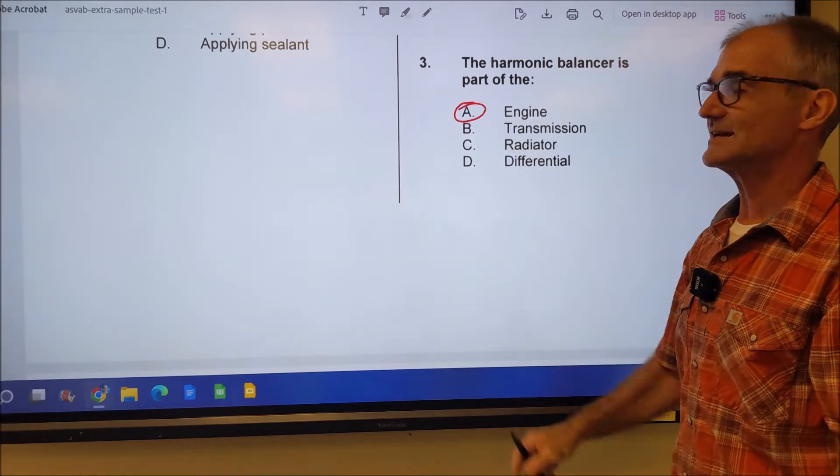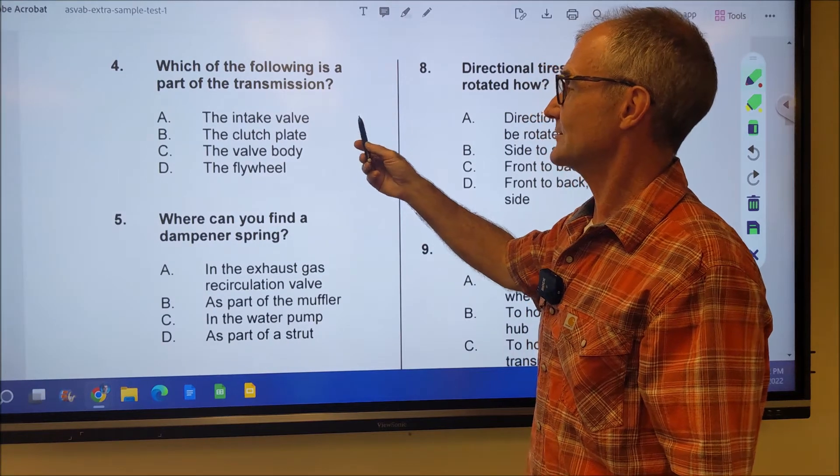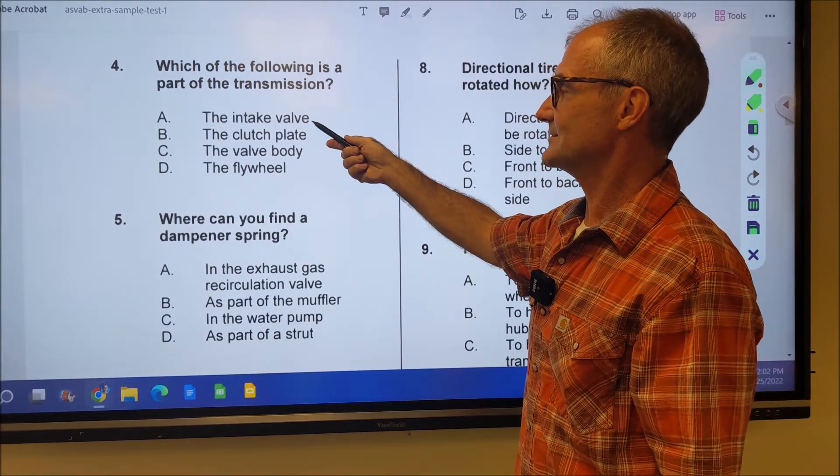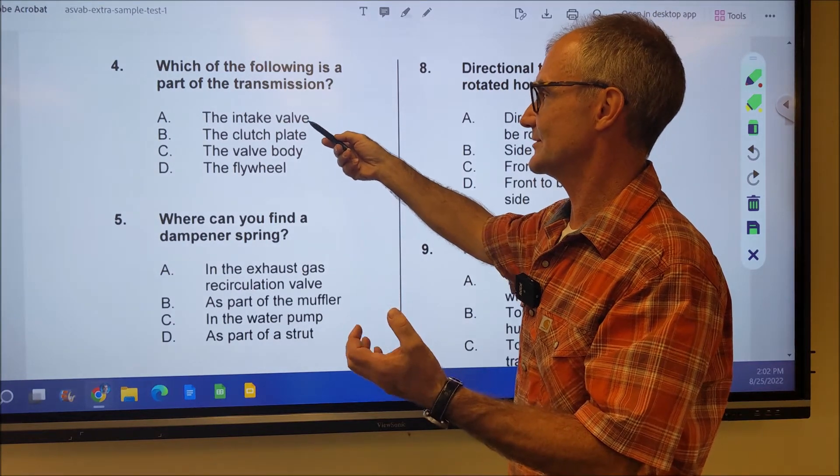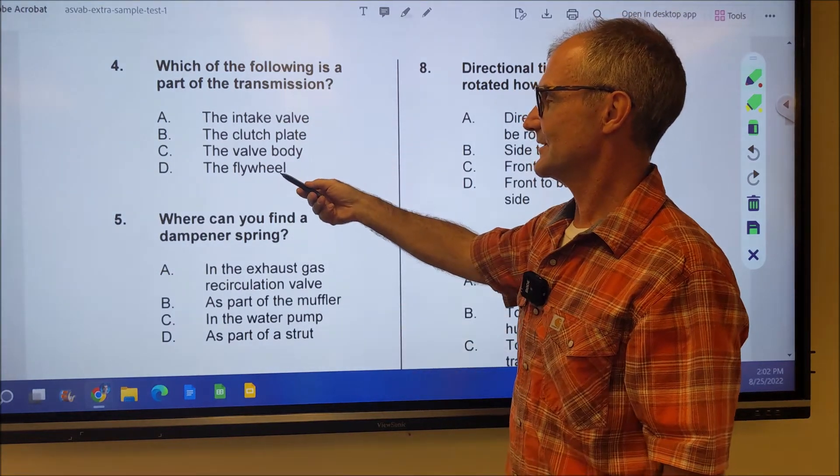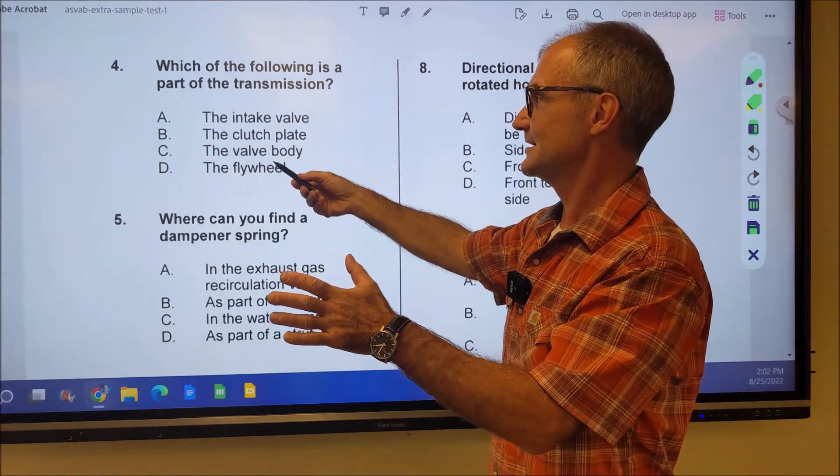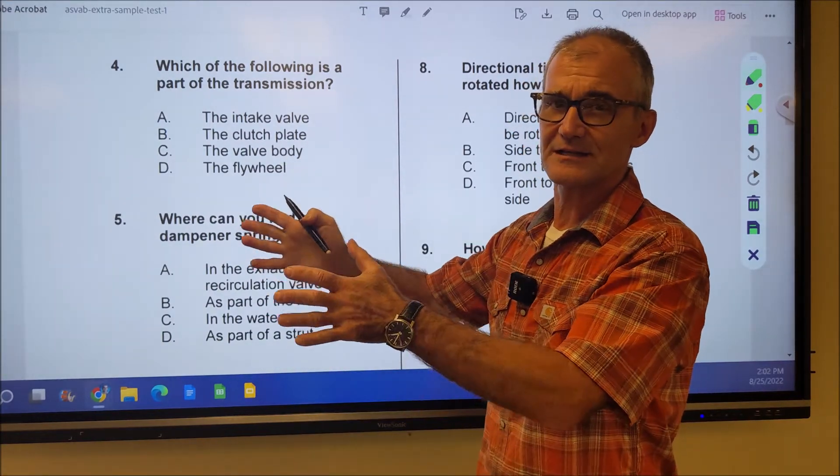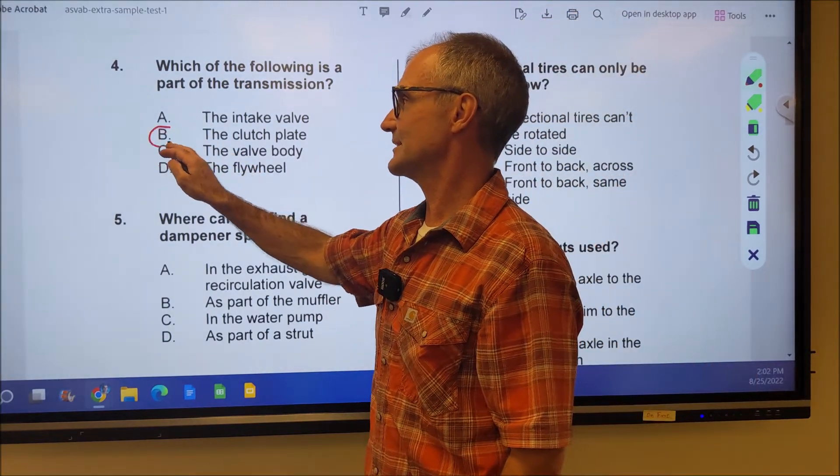Number four, which of the following is part of the transmission? Intake valve doesn't make sense. That's on the engine itself. Valve body and intake valve are both in the same area. The flywheel, that's a possibility. But the flywheel is the end of the engine. It engages the clutch plate, and the clutch plate engages the transmission. So number four would be the clutch plate.